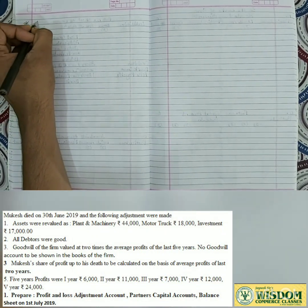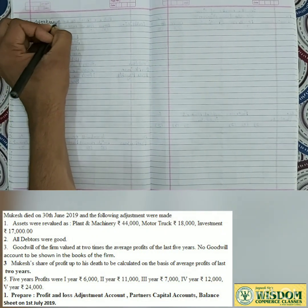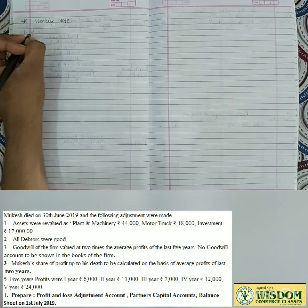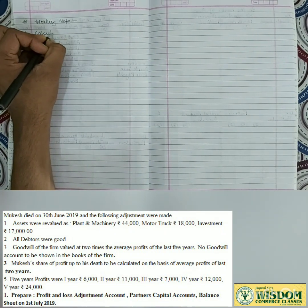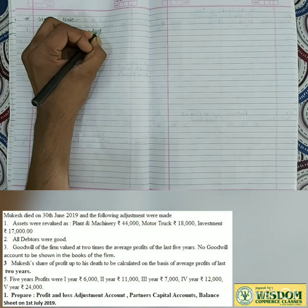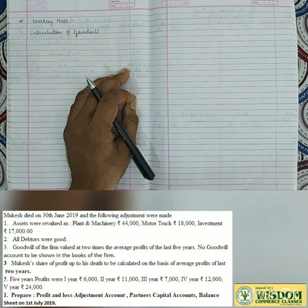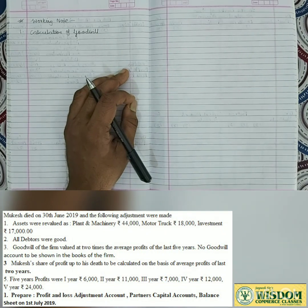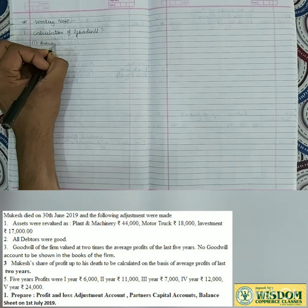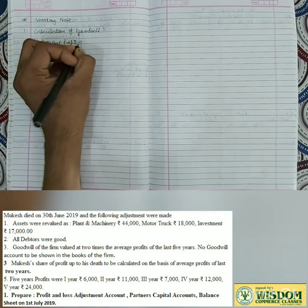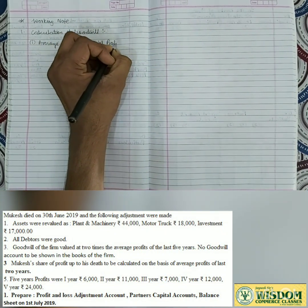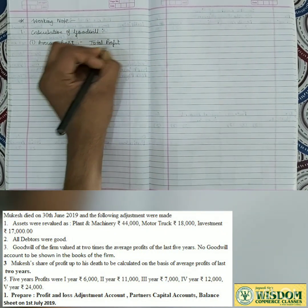Now in the exam, write the working note heading clearly and underline it. Working Note 1: Calculation of Goodwill. To calculate goodwill, we first find the average profit. Goodwill of the firm is valued at 2 times the average profit. Formula: Average Profit = Total Profit ÷ Number of Years.